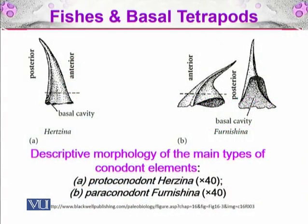Here you can see the descriptive morphology of the main types of conodont elements. For the first two, we can see the proto-conodont Herzina — there is a basal cavity and a cone-like structure; the anterior is on the right side and the posterior is on the left. For the paraconodont Furnishina, you can see the cone-like fossils or elements, including the basal cavity, and how they differ as well.